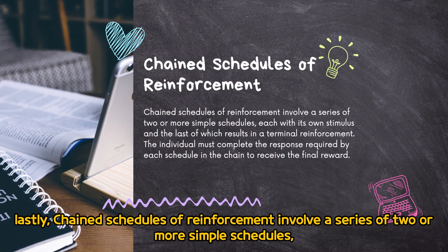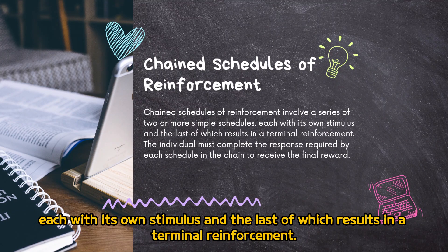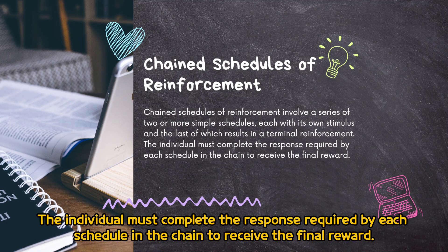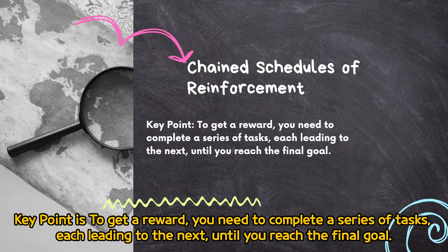Lastly, chain schedules of reinforcement involve a series of two or more simple schedules, each with its own stimulus, and the last of which results in a terminal reinforcement. The individual must complete the response required by each schedule in the chain to receive the final reward. Key point: to get a reward, you need to complete a series of tasks, each leading to the next until you reach the final goal.